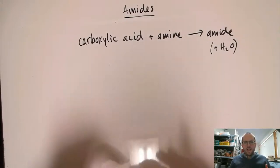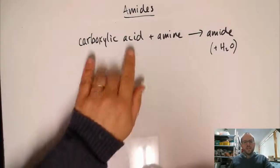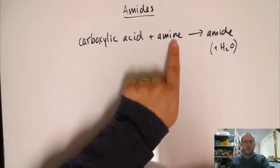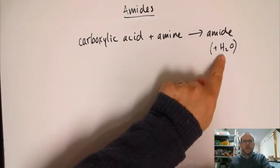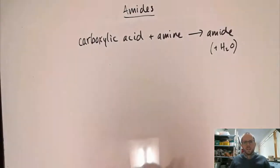Essentially an amide is formed when we take a carboxylic acid and react it with an amine. We get an amide that forms and we spit out a water molecule as we connect those things together.